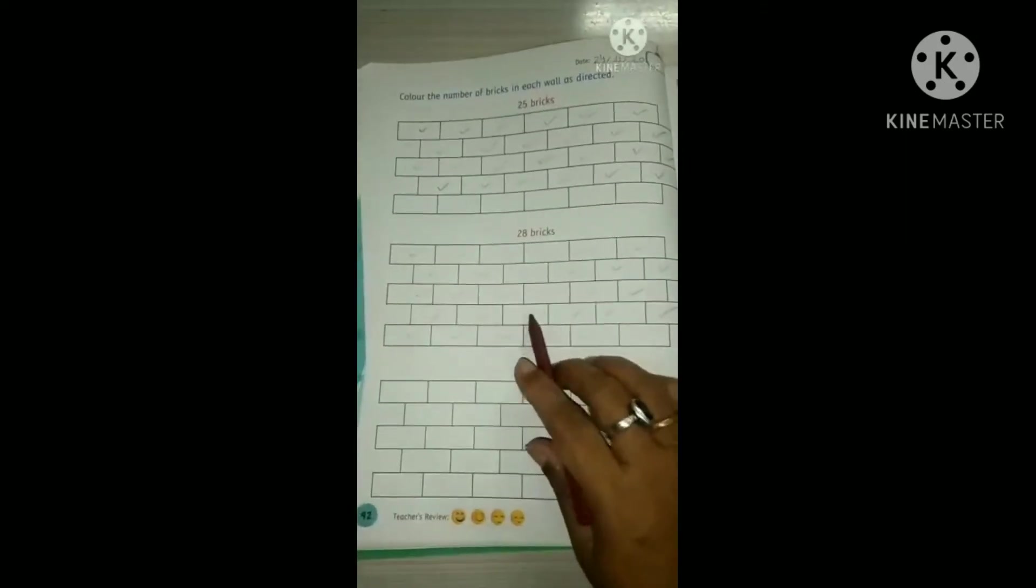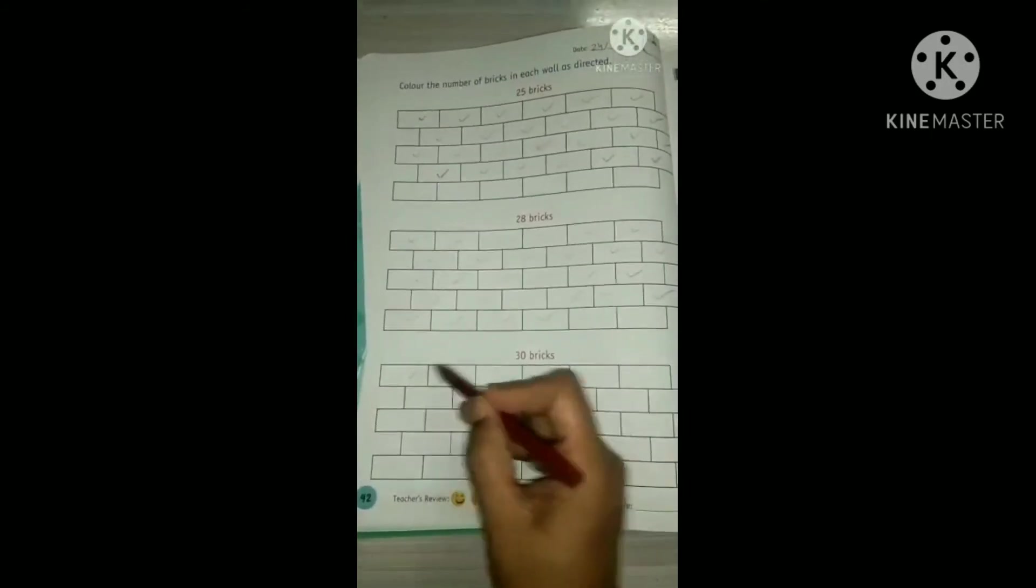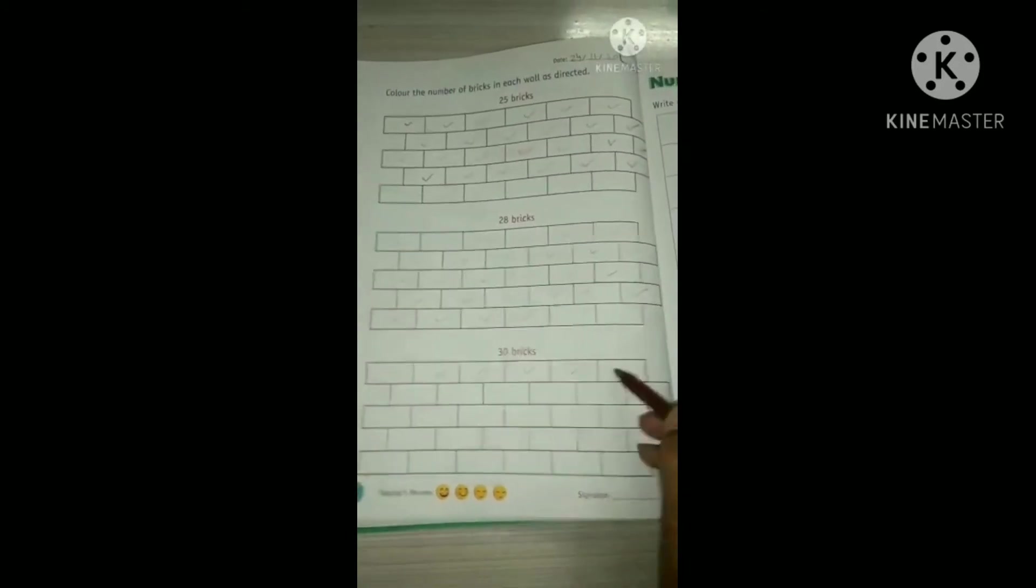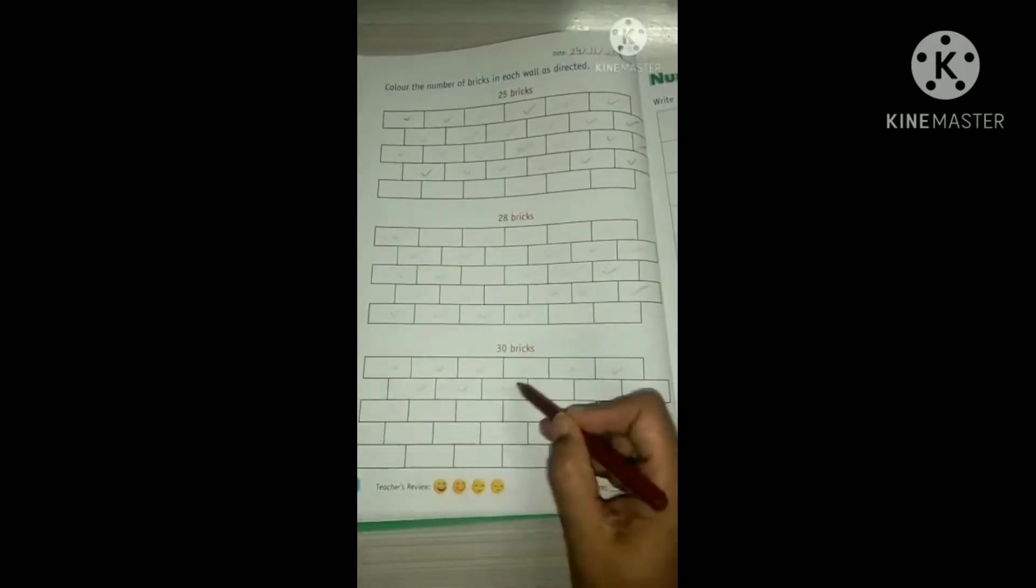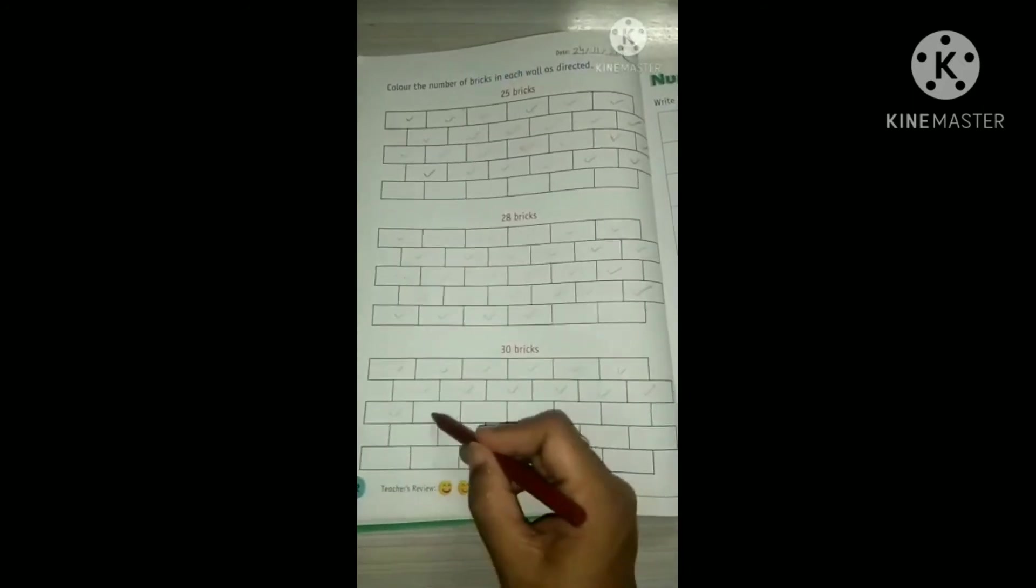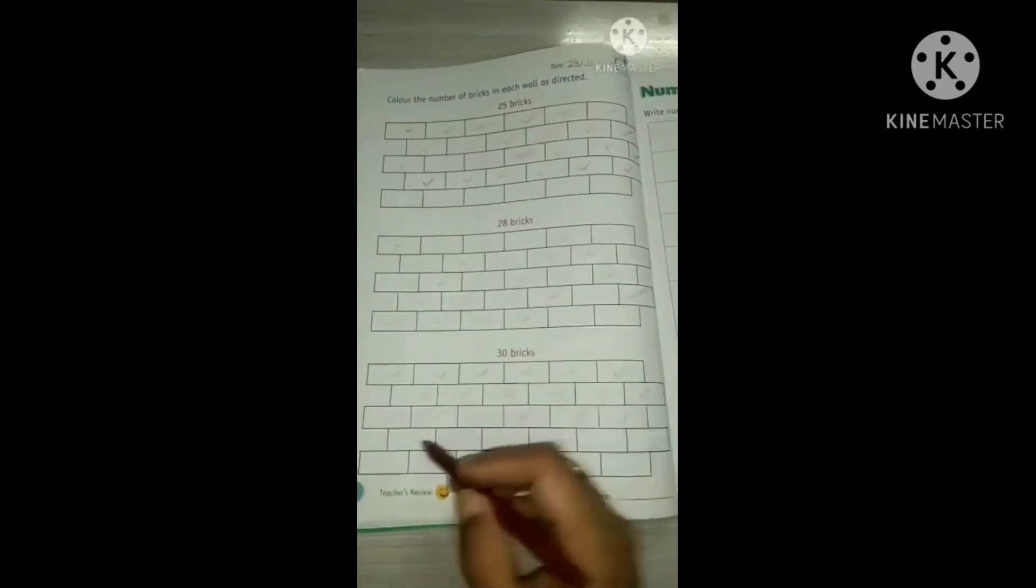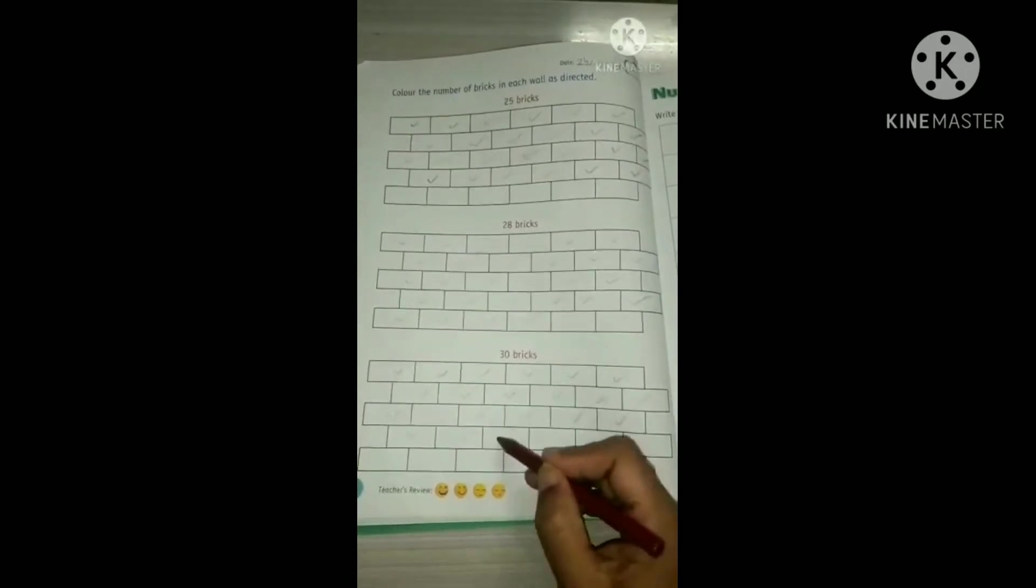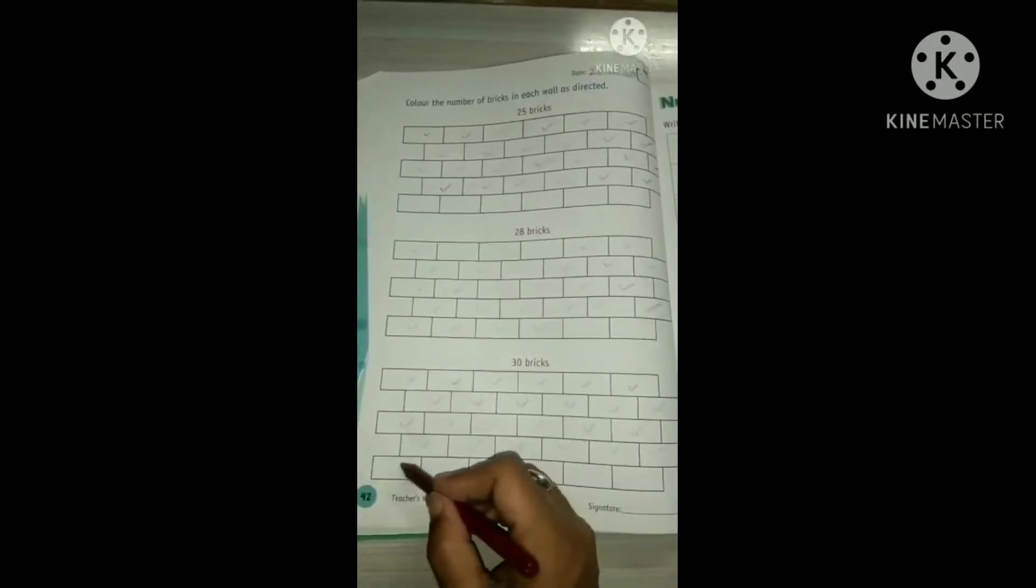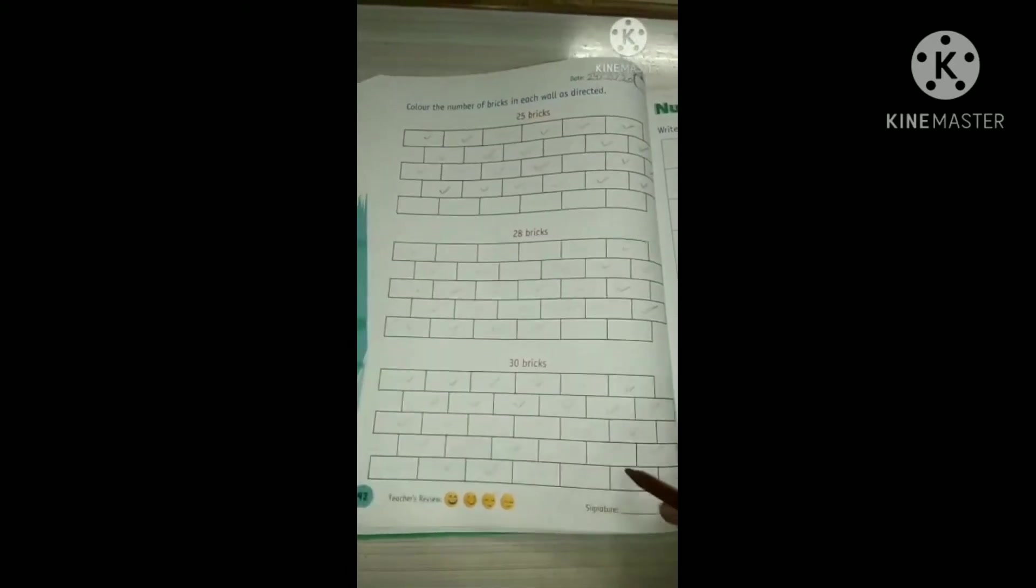Again, you can change your color, anyone, whichever you like. Now see, 30 bricks. 1, 2, 3, 4, 5, 6, 7, 8, 9, 10, 11, 12, 13, 14, 15, 16, 17, 18, 19, 20, 21, 22, 23, 24, 25, 26, 27, 28, 29, 30.